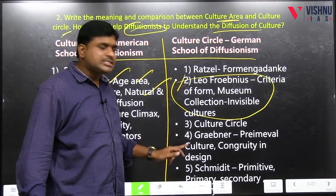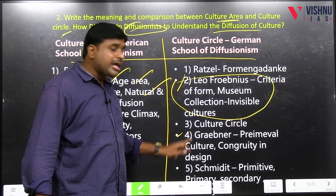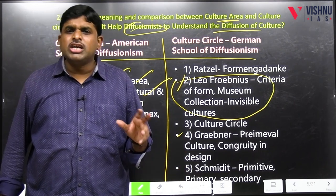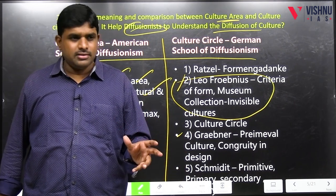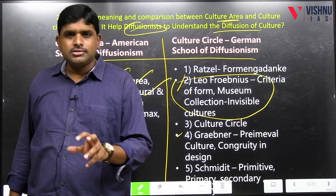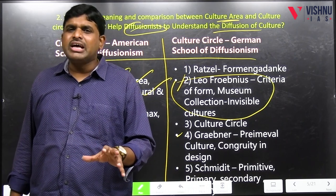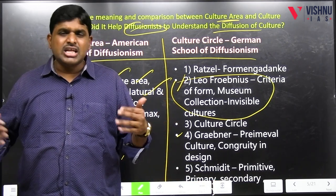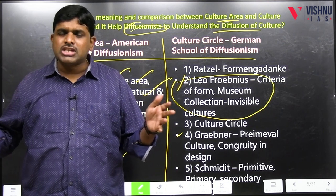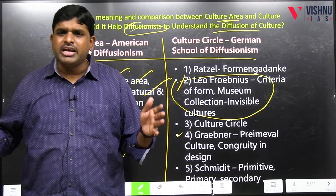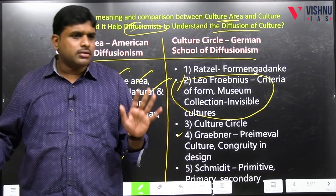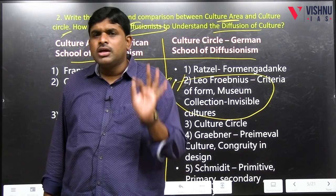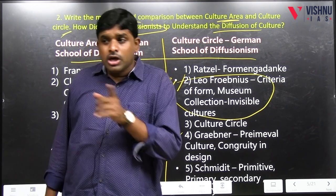Then Graebner: primeval cultures, also called Ur-kulturen — early man's culture. How many primeval cultures according to Graebner? Six: Tasmanian, Australian, Boomerang, Melanesian, Polynesian, Totemic. From there the culture got diffused across the world.